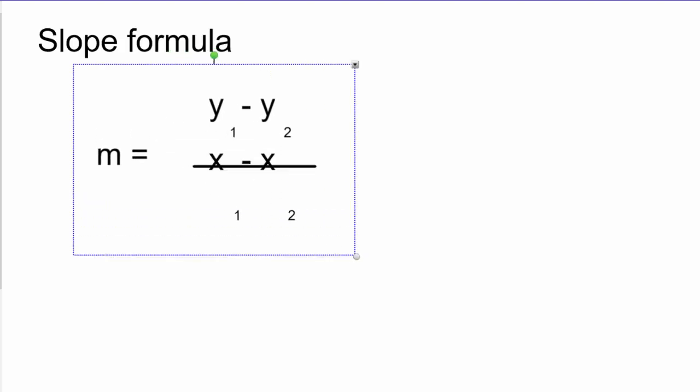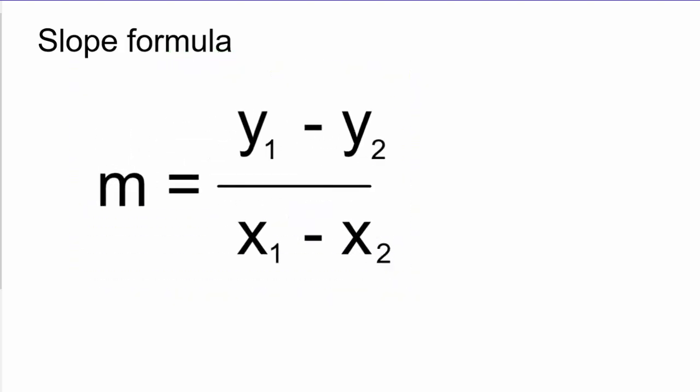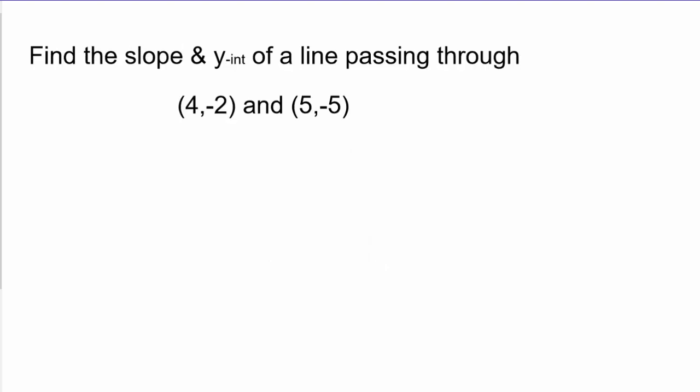The formula is y1 minus y2 divided by x1 minus x2. Let's do a quick example. The question you'll be getting is like: find the slope and y-intercept of a line passing through coordinates (4, -2) and (5, -5). So let's apply the formula.